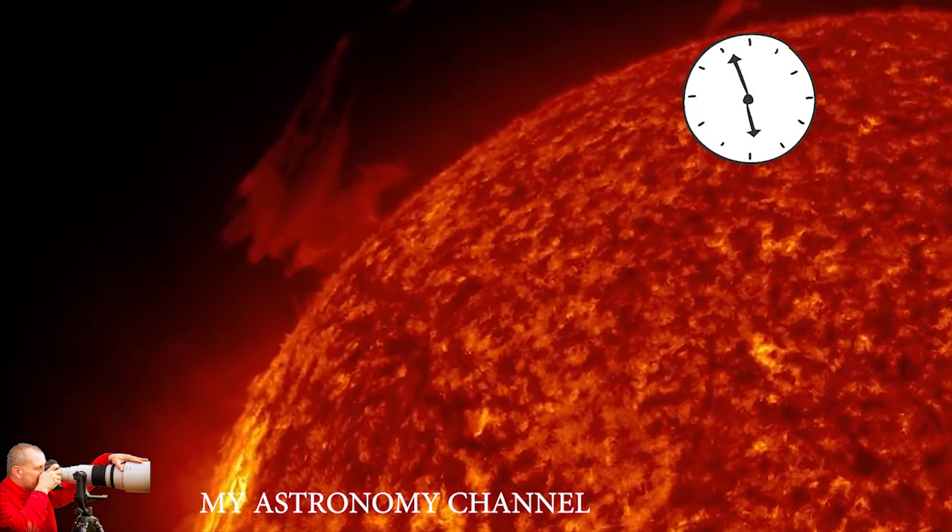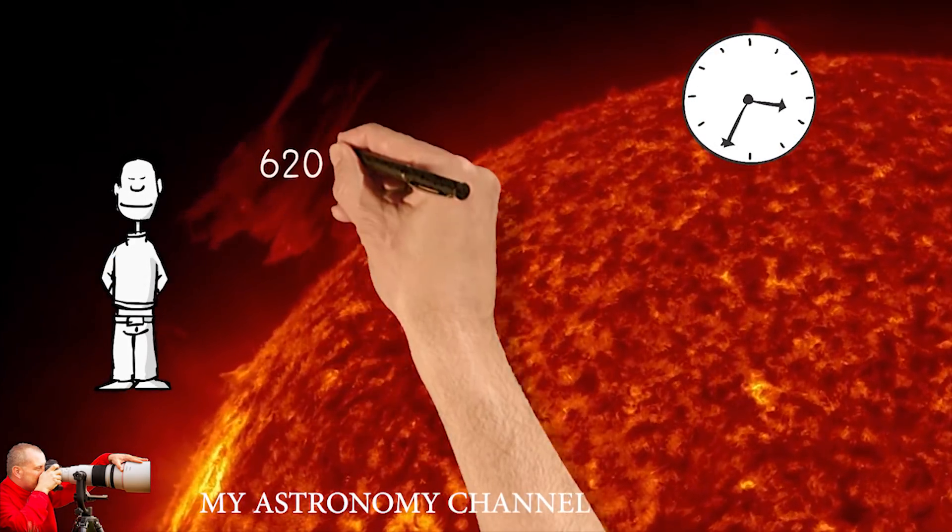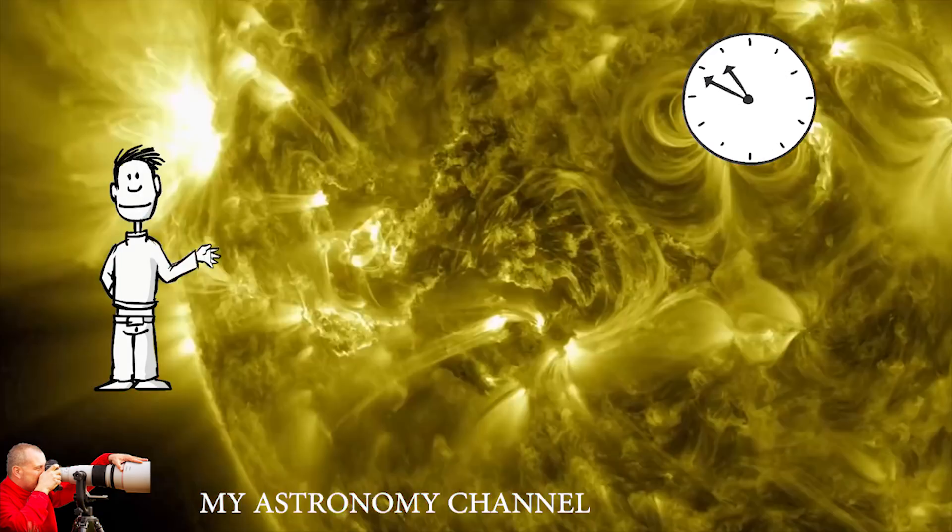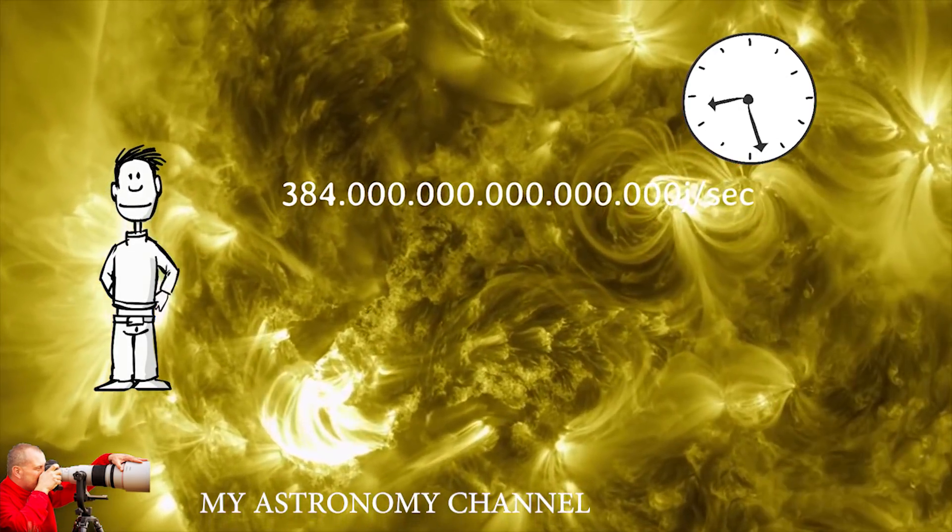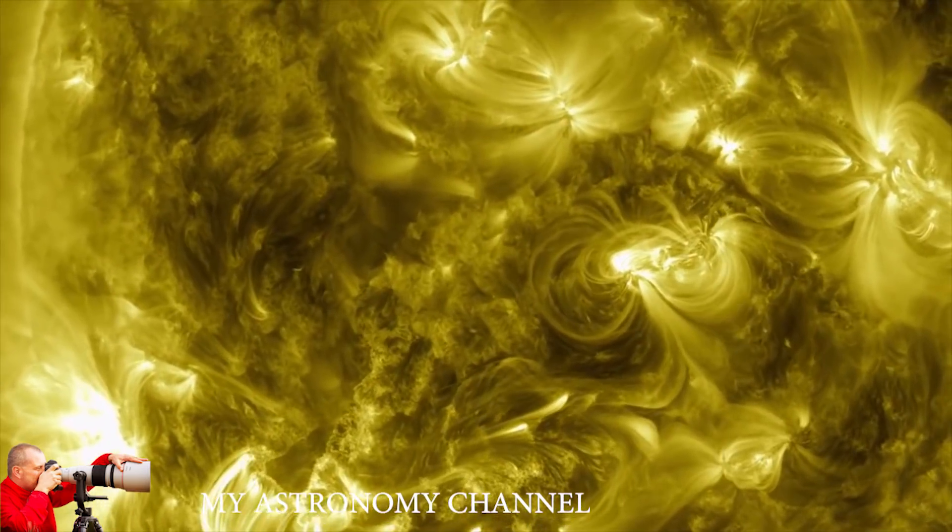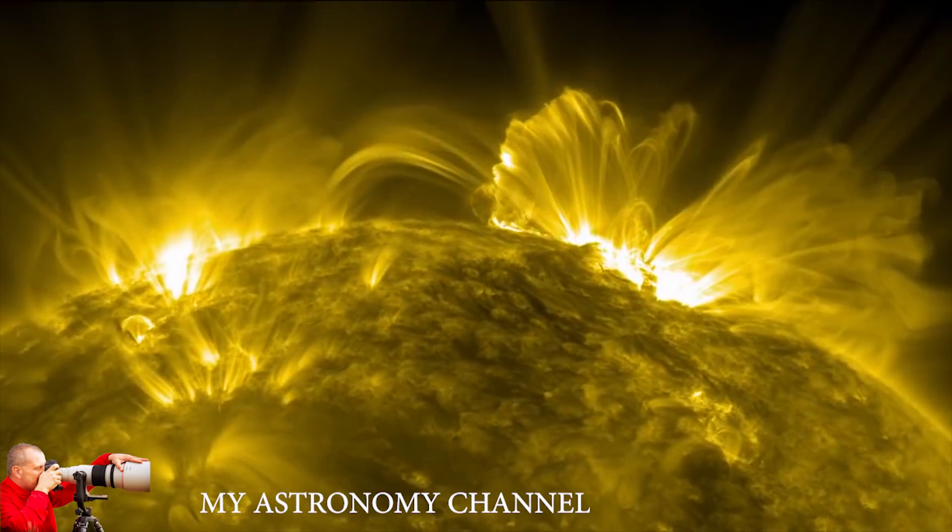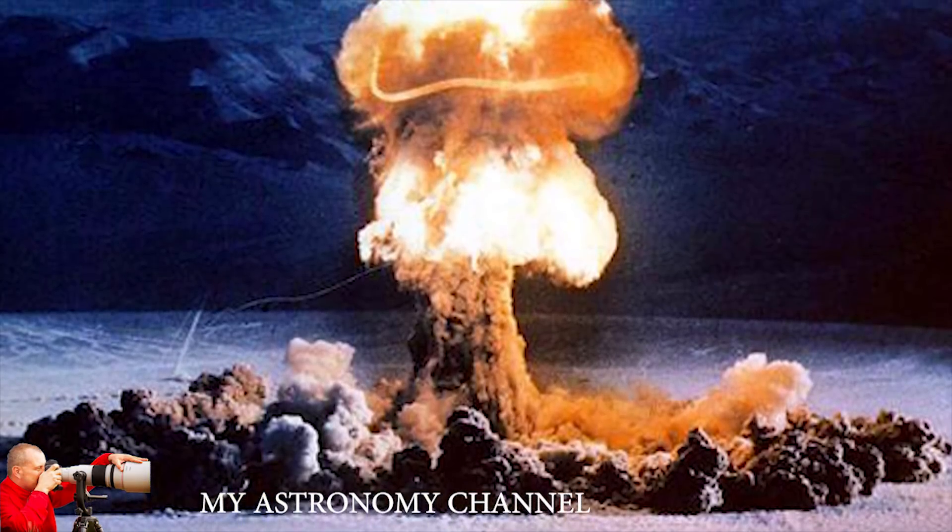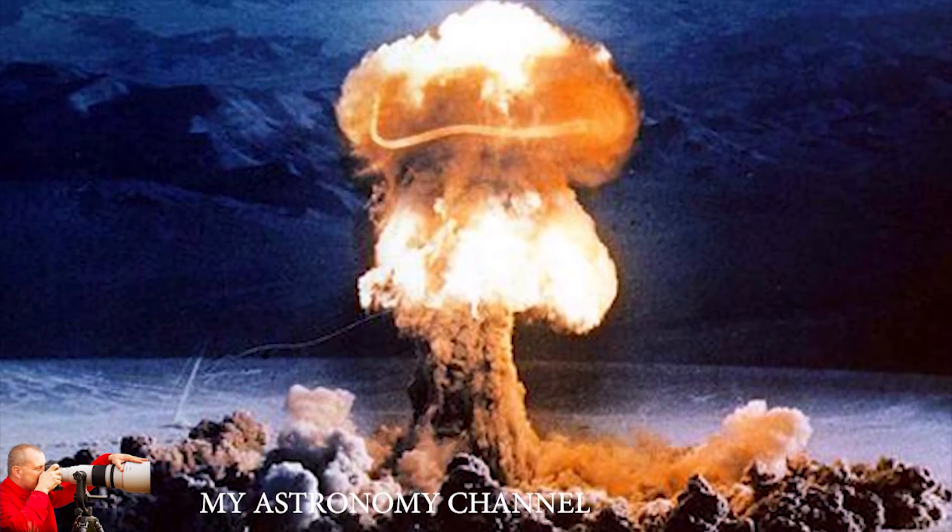Every second, the sun fuses 620 billion kg of hydrogen nuclei or protons into helium to produce 384.6 trillion trillion joules of energy per second. This is equivalent to the energy released in the explosion of 91.92 billion megatons of TNT per second.